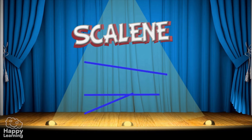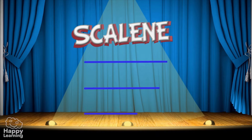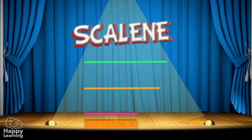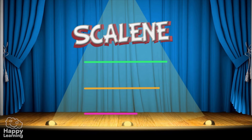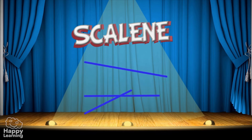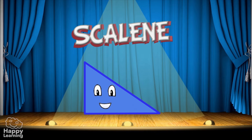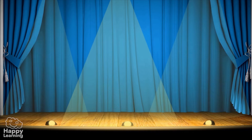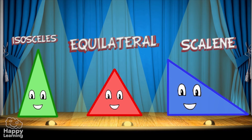And finally, let's look at a scalene triangle — all three sides are a different length. Easy! A scalene triangle is the one with three different length sides; none of its sides are equal.